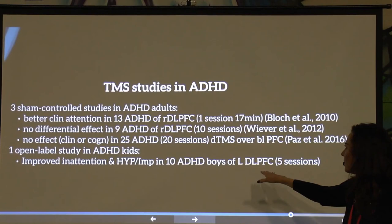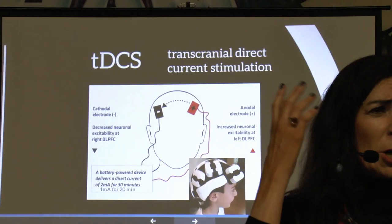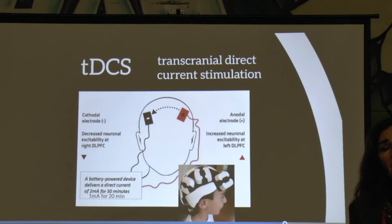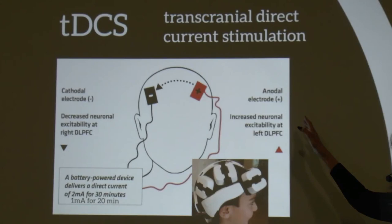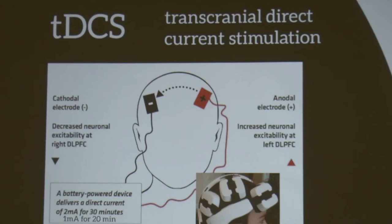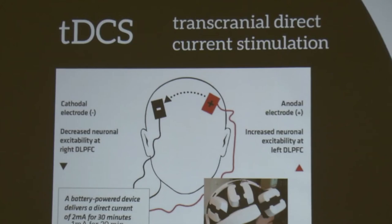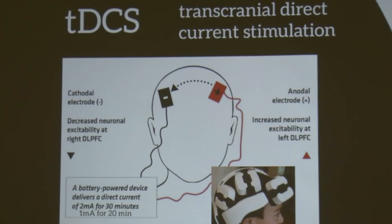In tDCS there is an anode and a cathode. The anode increases the excitability of neurons underneath it, so you can actually increase the activity of underlying neurons. The cathode decreases the activity of underlying neurons. This is used in epilepsy to down-regulate overactive areas. It has been used safely in children with epilepsy and in many healthy children with no serious side effects. We know tDCS can lead to longer-term connections between neurons — neuroplastic effects. In healthy adults, the longest study found stimulation improved cognitive performance that lasted one year.